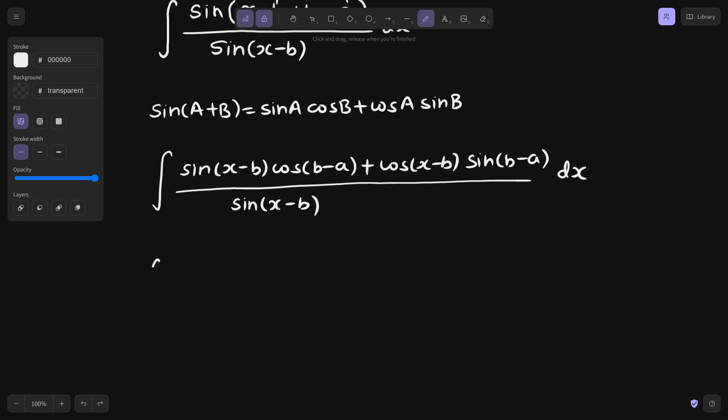So now if you see, if I divide them separately taking this plus, so sin x minus b cos b minus a divided by sin x minus b plus, dx will also come here.